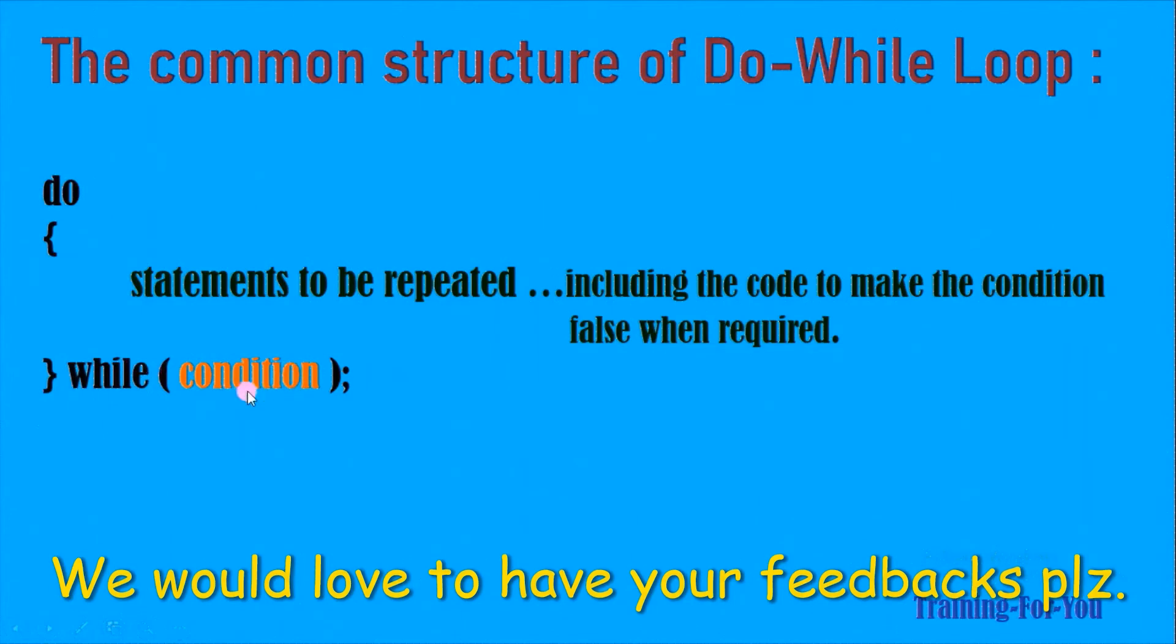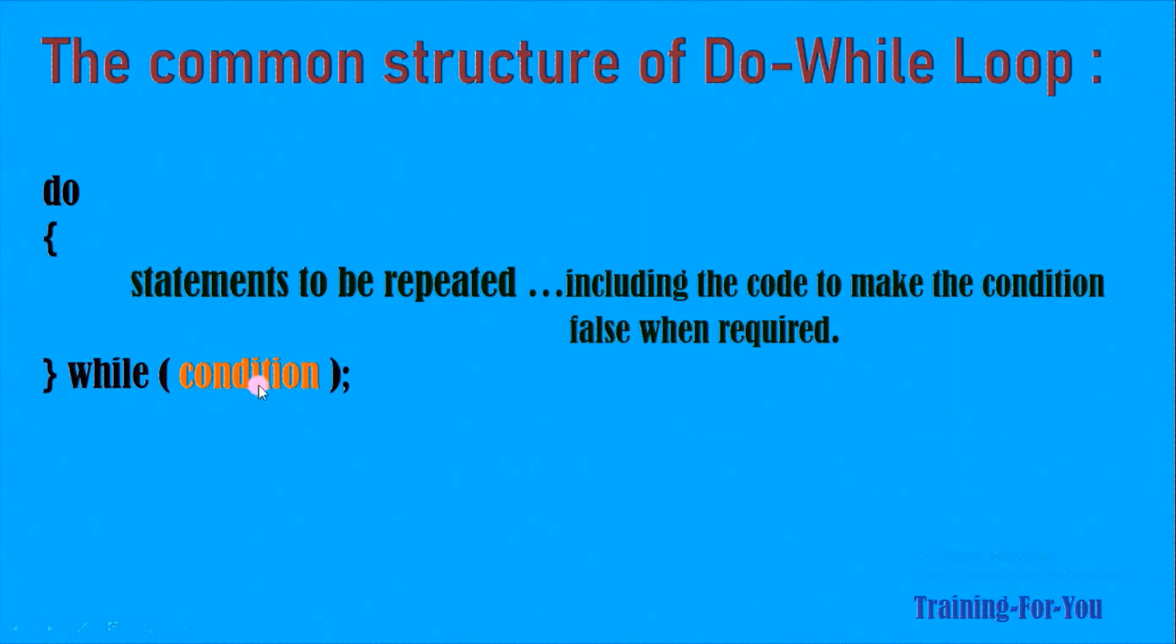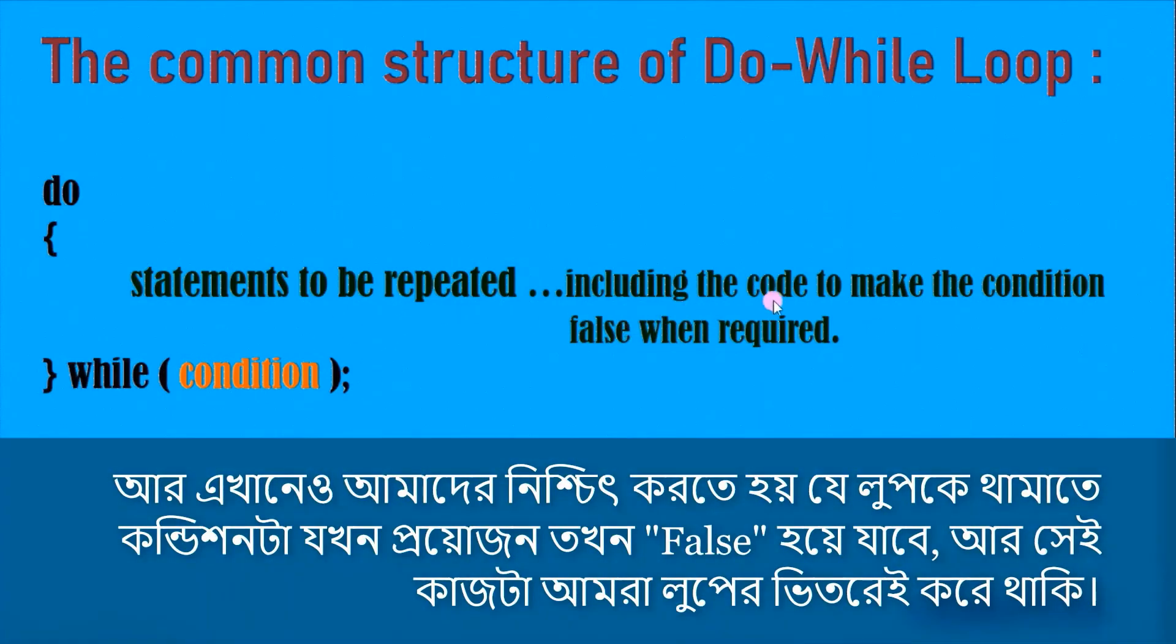As long as the condition remains true, it goes on repeating the loop body. The moment the condition becomes false, it comes out. Now here again we need to ensure that at one point of time this condition becomes false, and that provision is met within the loop body.